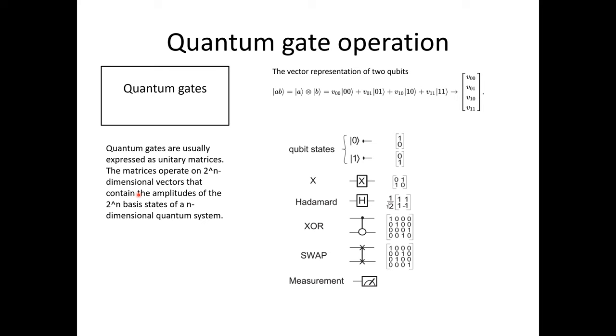I would like to give a basic introduction to quantum gates, which is the basic tool we will use in quantum machine learning and will be helpful for us to understand quantum machine learning examples. In the paper, here are the descriptions by author of quantum gates. Quantum gates are usually expressed as unitary matrices. The matrices operate on 2 to the power of n-dimensional vectors that contain the amplitudes of the 2 to the power of n-basis states of an n-dimensional quantum system. This looks to be very complicated and hard to understand.